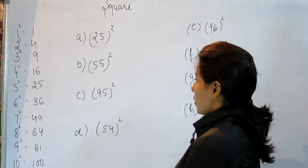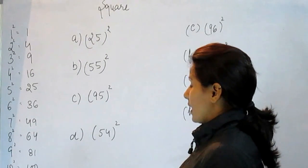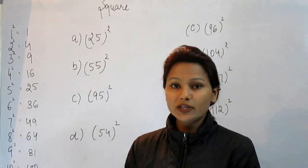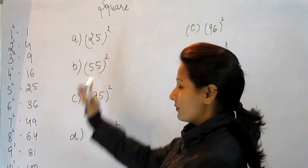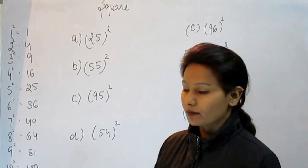I have written some questions on a board. So first it's 25. I hope everybody knows what the square of 25 is, that is 625. Let's see how it comes.